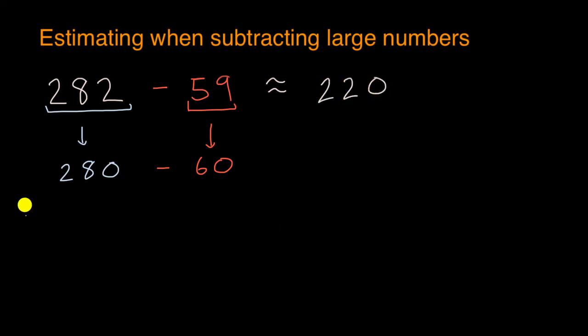22 tens. Or another way to think about it, you have two hundreds and then eight tens, and then you're gonna take six tens away from it. So then you'll be left with two hundreds and two tens, just like we have here.